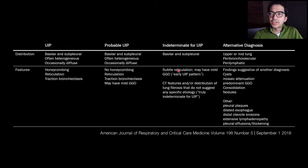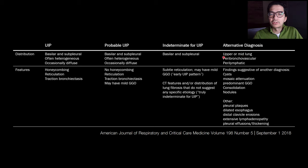Now let's look at the alternative diagnosis category. There are two ways you can have an alternative diagnosis. One is the wrong distribution — meaning the distribution is upper to mid lung, or the fibrosis is in the central part of the lung rather than the subpleural or peripheral part, such as peribronchovascular or perilymphatic distribution.